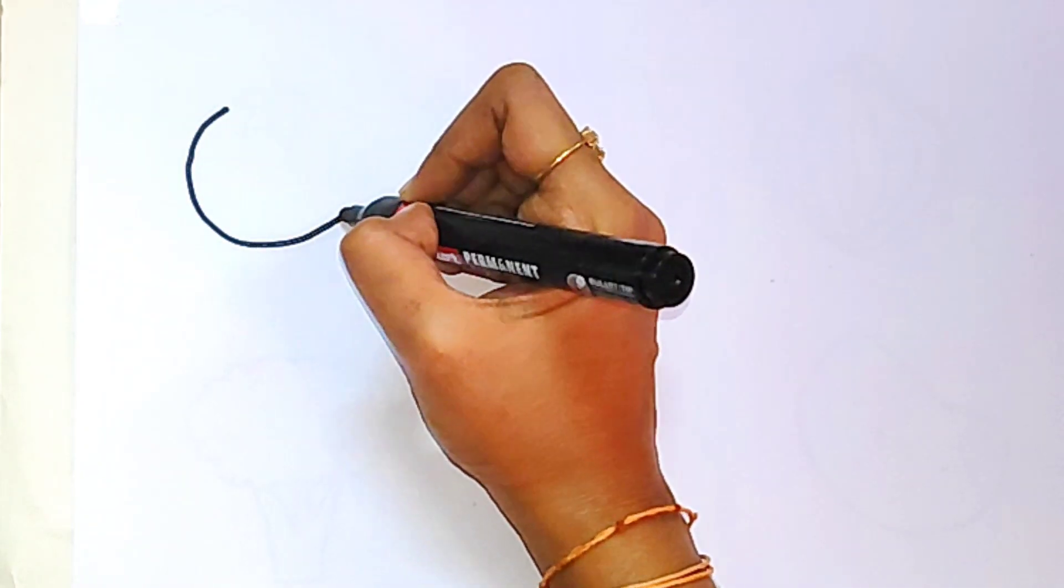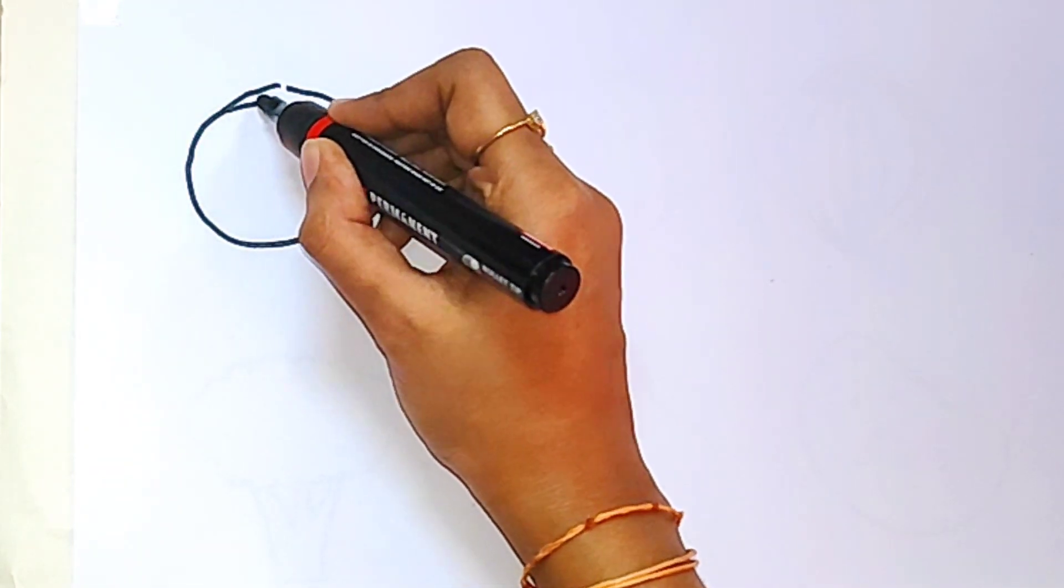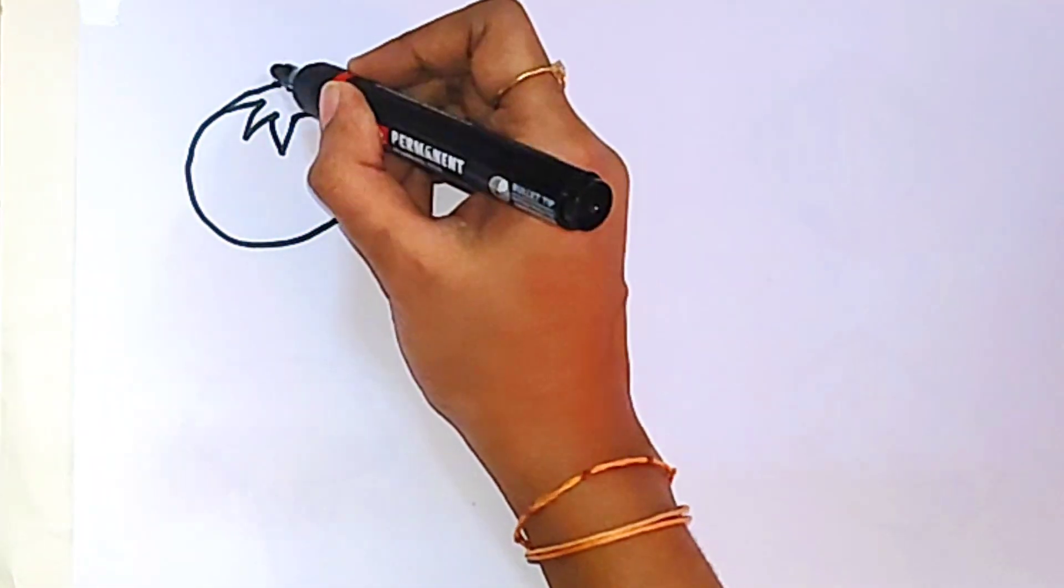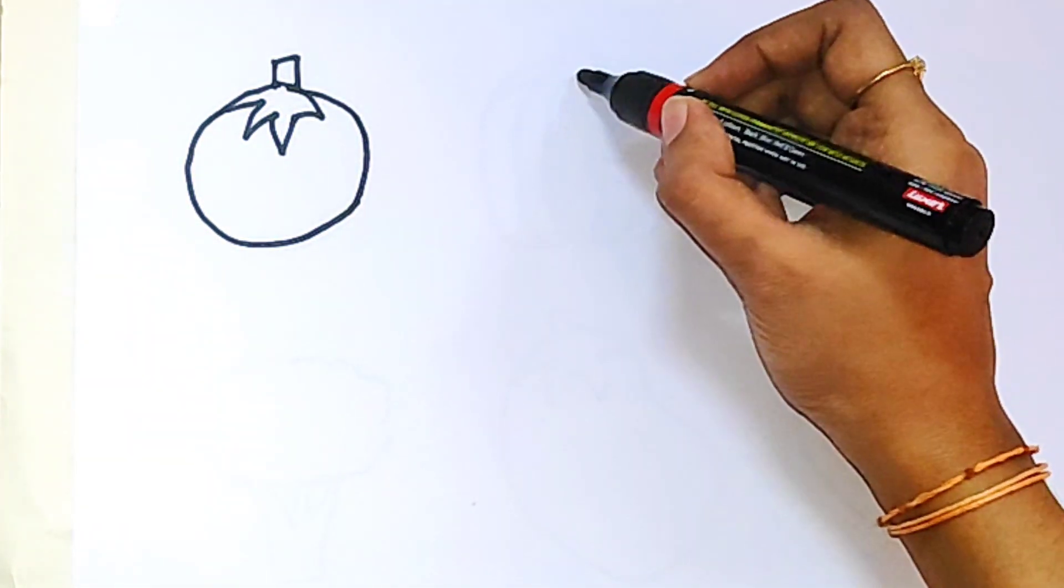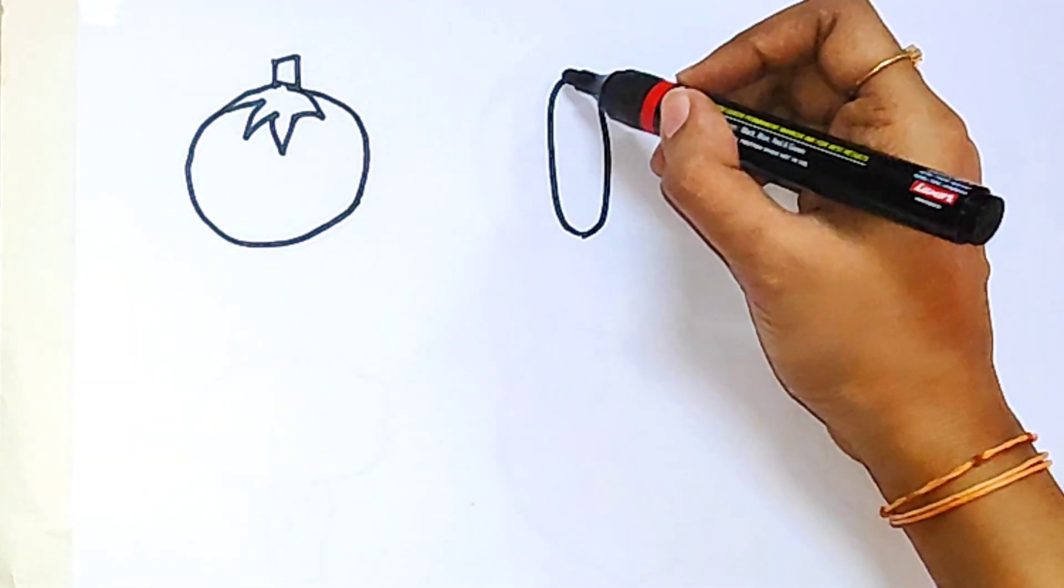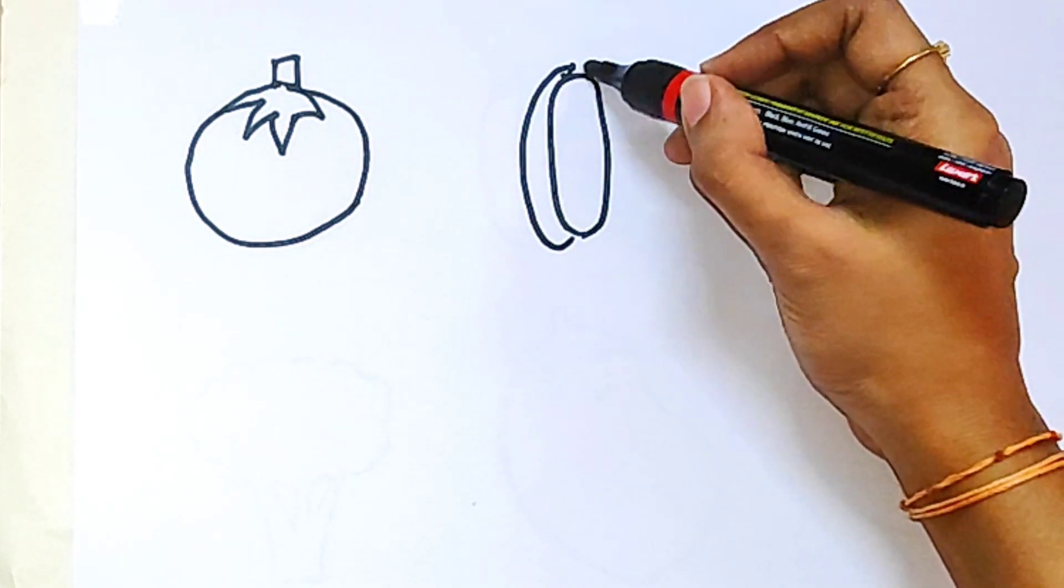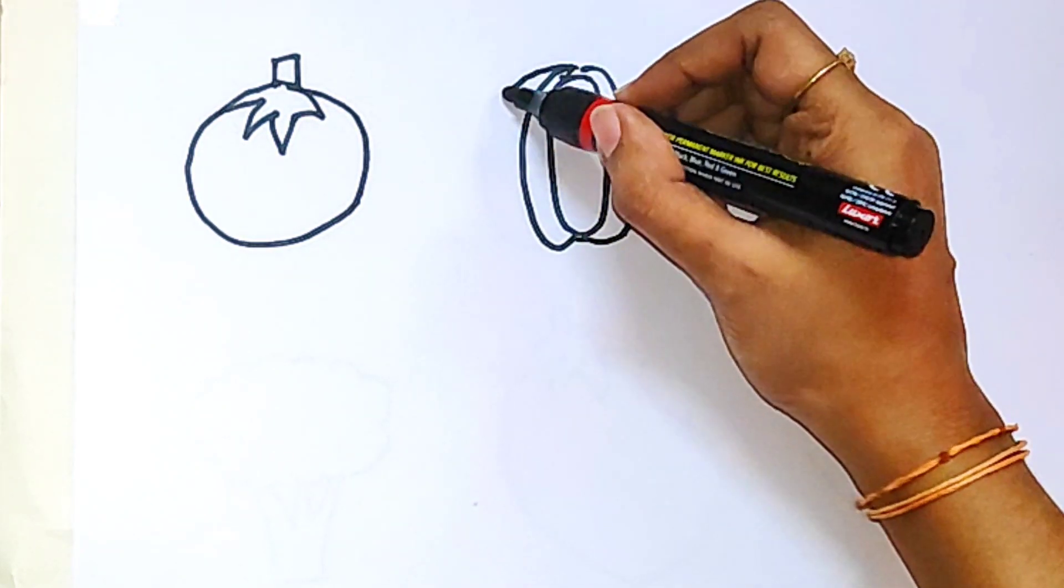Hello children, in this video let's see how to draw the vegetables. This is a tomato. This is capsicum. Let's draw the capsicum.